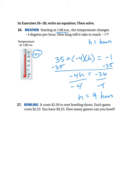Our next problem is with bowling. So, it costs $2.50 to rent bowling shoes. And then, each game costs $2.25. You have $9.25. How many games can you bowl? So, we're going to say we're going to let G equal games. And, it's $2.50 to rent the shoes. You only have to do that once. And then, it's $2.25 times however many games you play. And, that's going to be equal to $9.25.